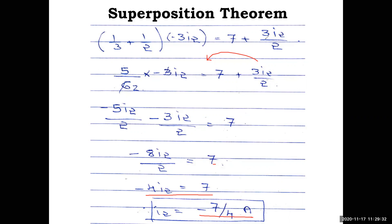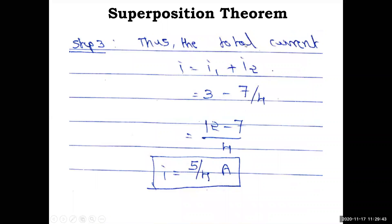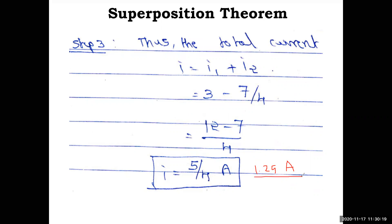Using the superposition theorem, total current i = i1 + i2 = 3 + (−7/4) = 3 − 7/4. Taking LCM: (12 − 7)/4 = 5/4 amps, which equals 1.25 amps. The answer can be expressed as 5/4 or 1.25 amps.